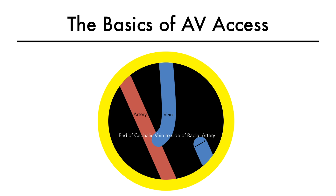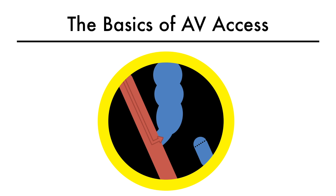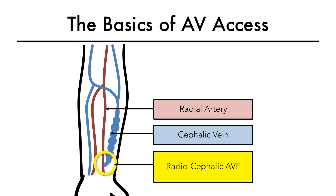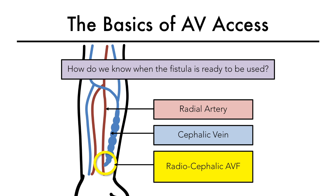Following the creation of an AV fistula, the high shear stress causes both arterial and venous dilation. As the vein is exposed to the high shear stress and flow from the artery, it starts to arterialize — that is, it starts to dilate and enlarge over weeks, resulting in the formation of a mature AV fistula. So this is our newly created radiocephalic fistula. How do we know it's ready to be used?